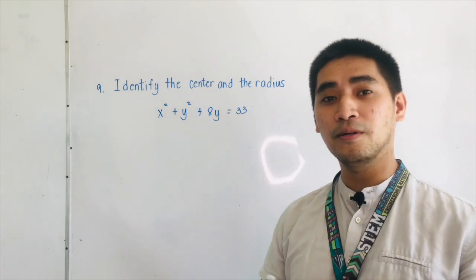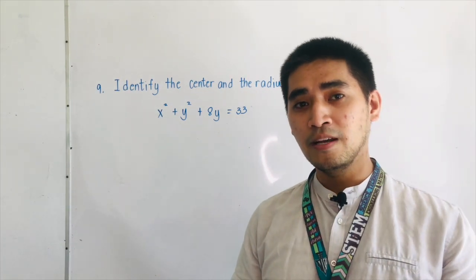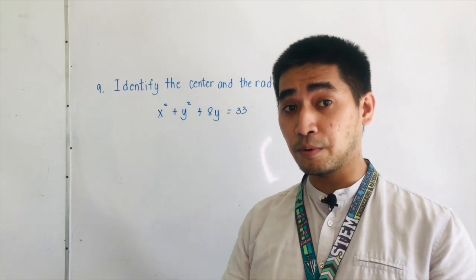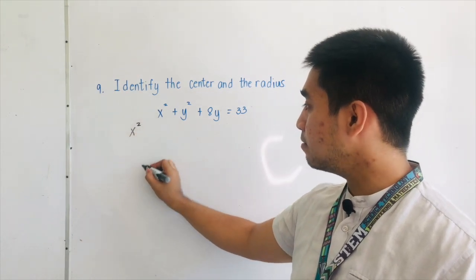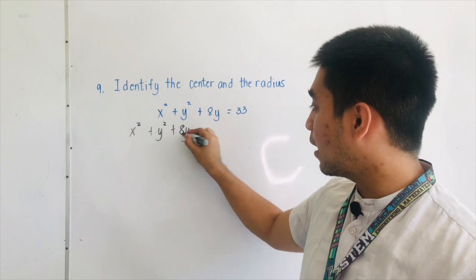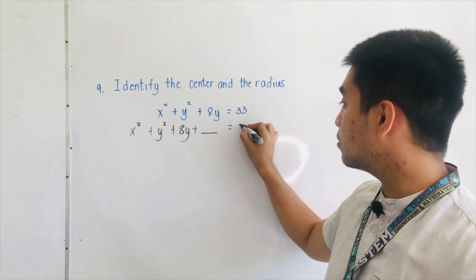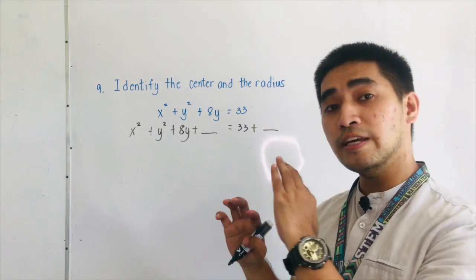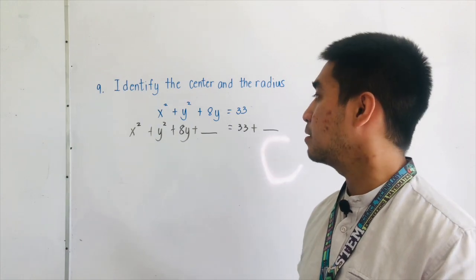So we have here an example: x squared plus y squared plus 8y is equal to 33. All we have to do is to complete the square. We'll be having x squared plus y squared plus 8y plus the term being completed is equal to 33 plus this term again.